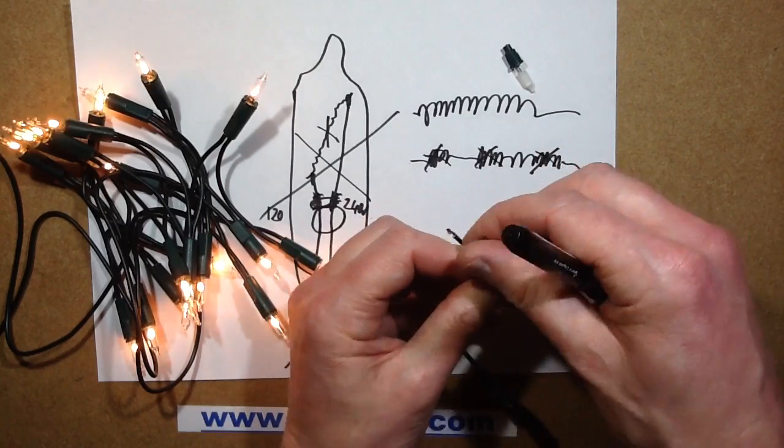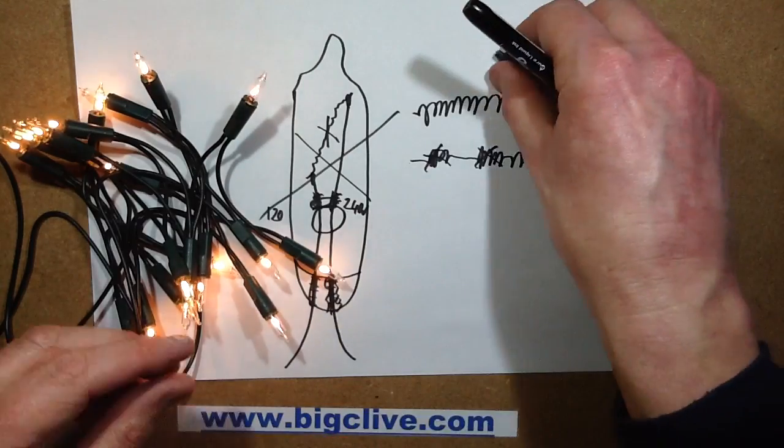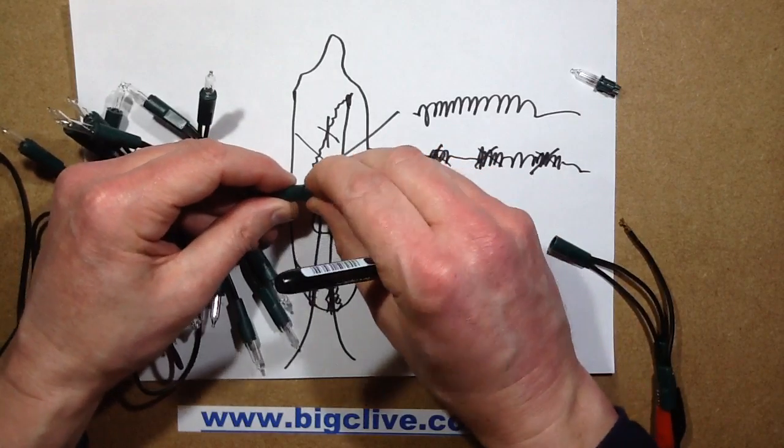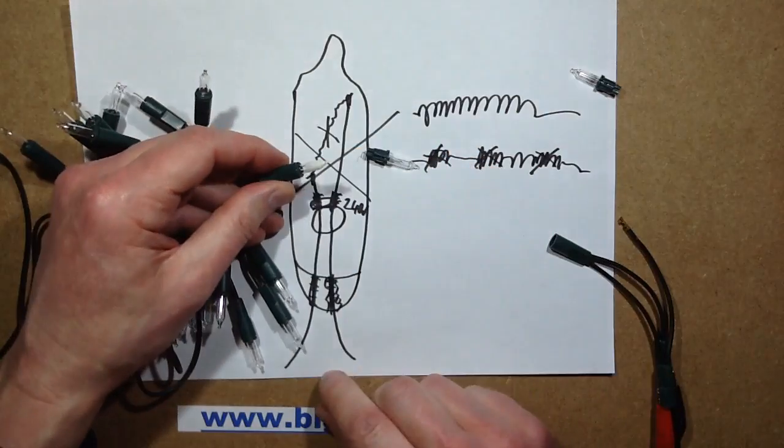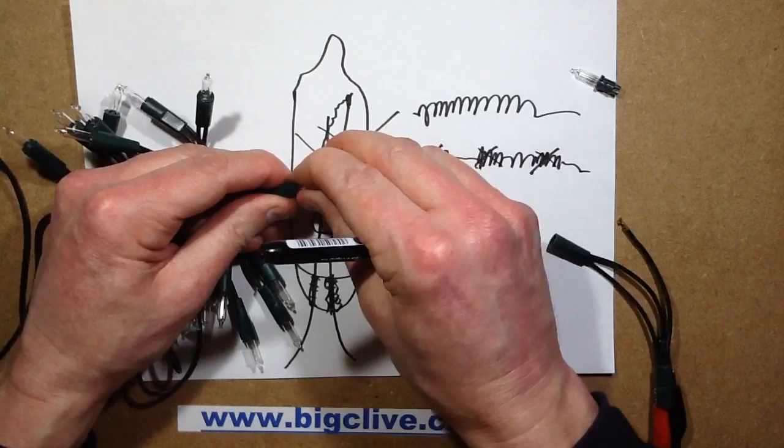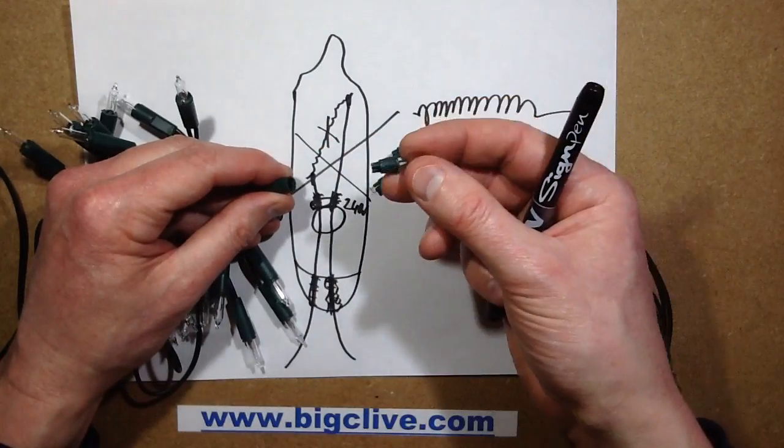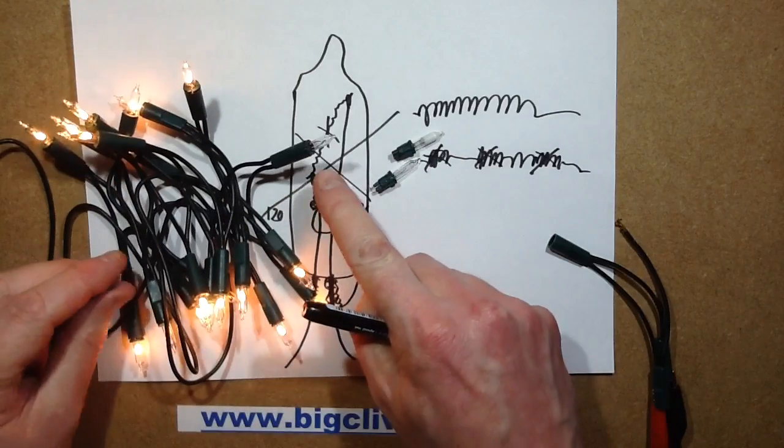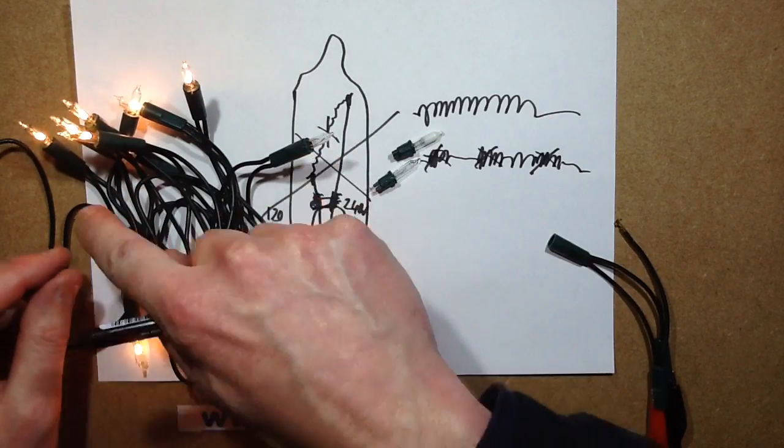Now, so this lamp's blown. This lamp's blown. So I'm going to put the fuse lamp in. And because it's a fuse lamp, it's not got that little link across it. The lights don't light. However, the one I've just blown, that has the little link, has now shorted out with the high voltage across it and the rest of the lamps have lit.